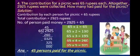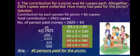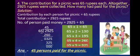Question number 4: The contribution for a picnic was 65 rupees each. Altogether 2925 rupees were collected. How many had paid for the picnic? In this question, the total amount collected is 2925 rupees and each person contributed 65 rupees. We have to find the number of persons who contributed. Number of persons = 2925 divided by 65.